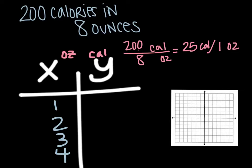If I have 1 ounce, I have 25 calories. If I have 2 ounces, that means I have 50 calories because 25 is 1 ounce. Another 25 makes 2 ounces. If I have 3 ounces, that's 25 times 3, and that will give me 75.